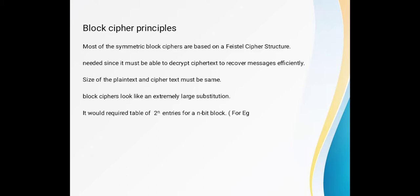Block cipher looks like an extremely large substitution. When we talk about block cipher principles, we use two techniques: substitution and permutation. Substitution is what we sometimes need to expand the message and sometimes reduce the size of the block — for example, expanding from 32 bits to 48 or 64 bits, or reducing. So in block cipher principles, we sometimes need to use large substitutions.